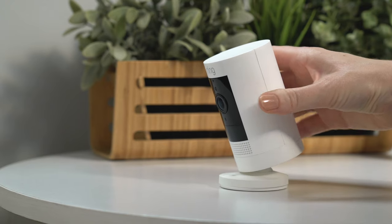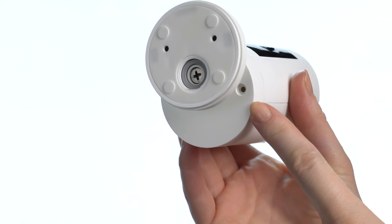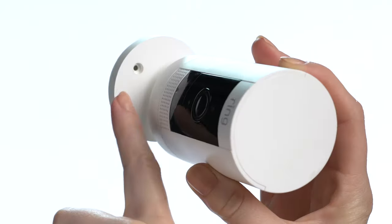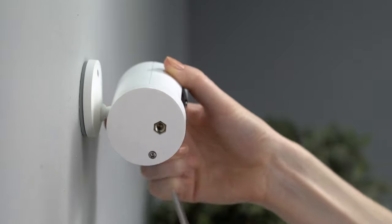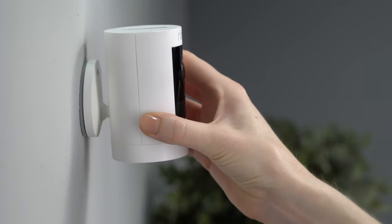Your Stick Up Cam features two optional security screw locations to secure the base and the bottom cover. To add them, rotate the base of your Stick Up Cam, then insert the included screws and tighten each of them with a Phillips head screwdriver.